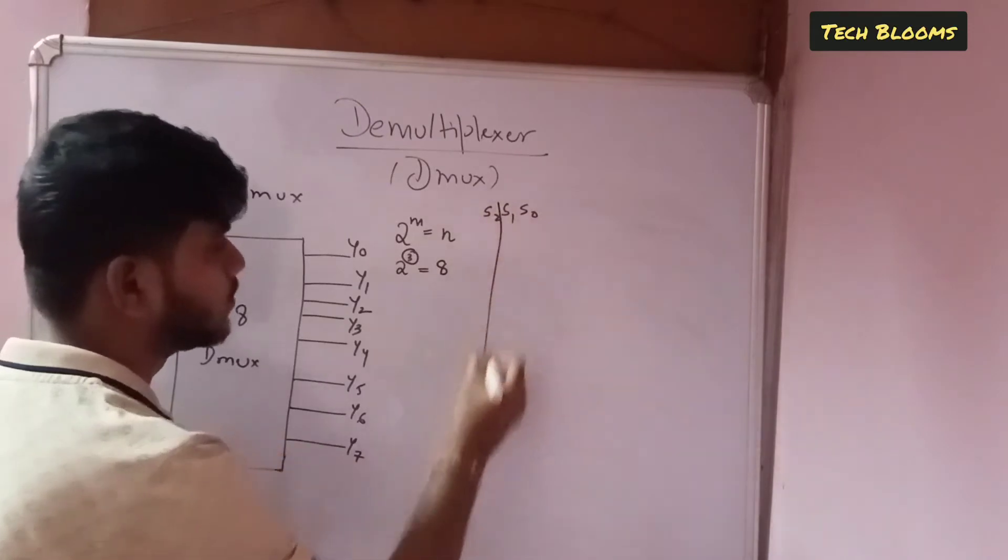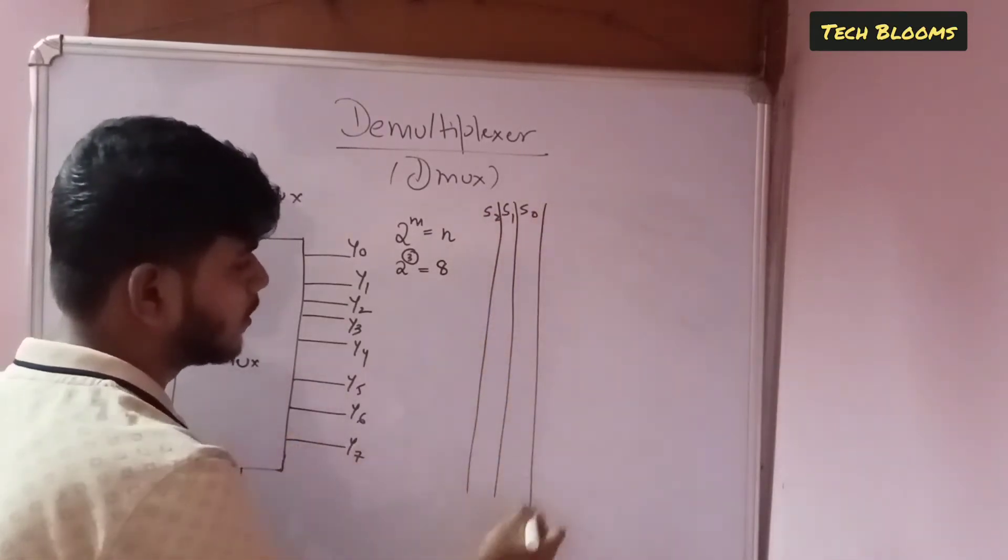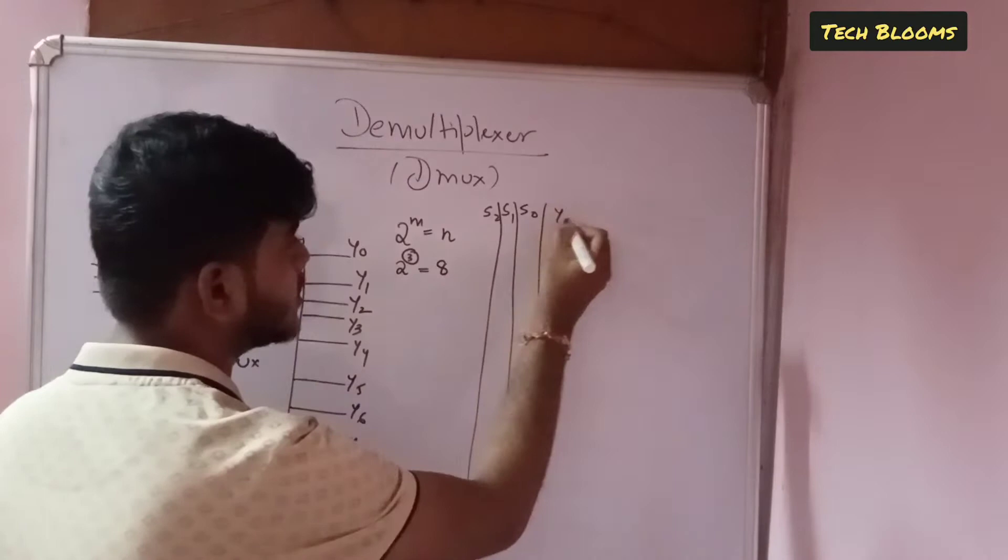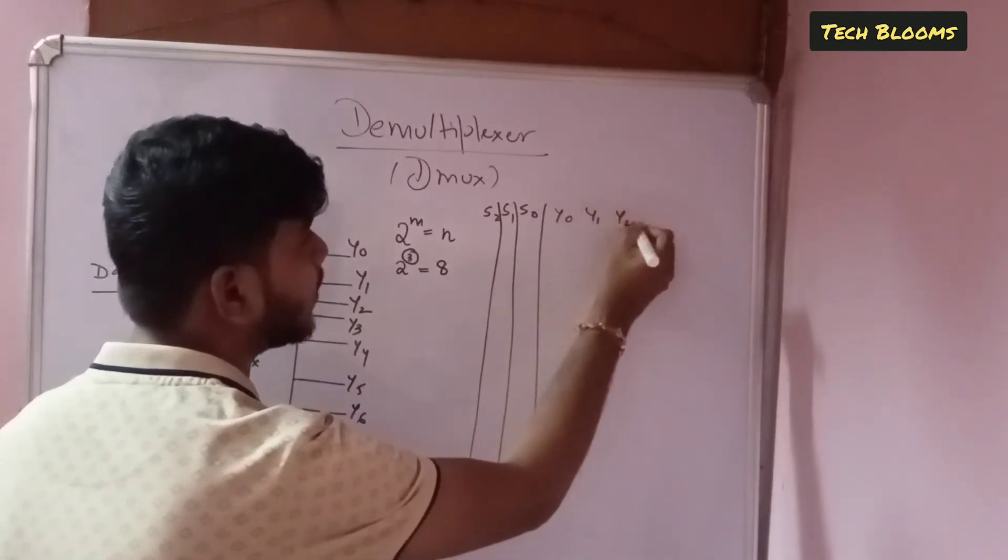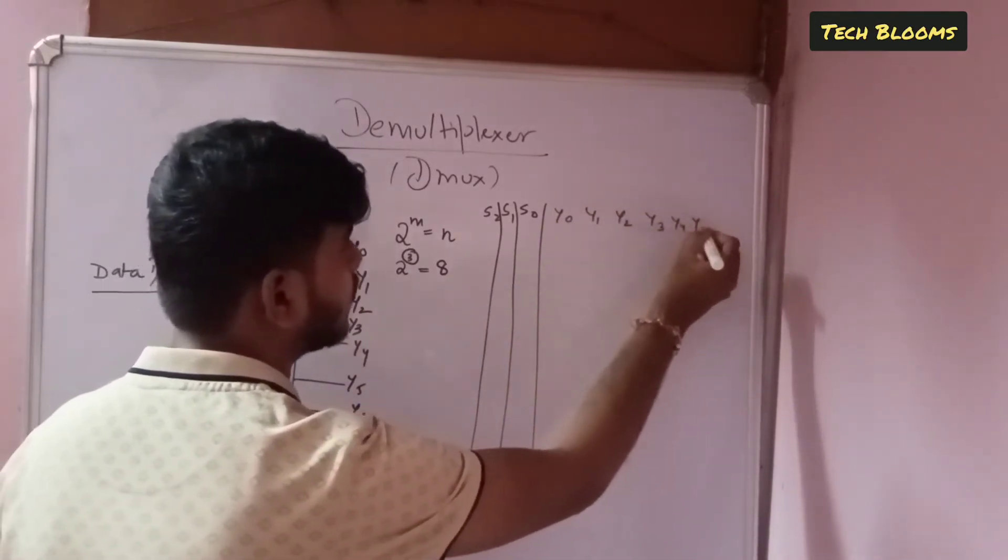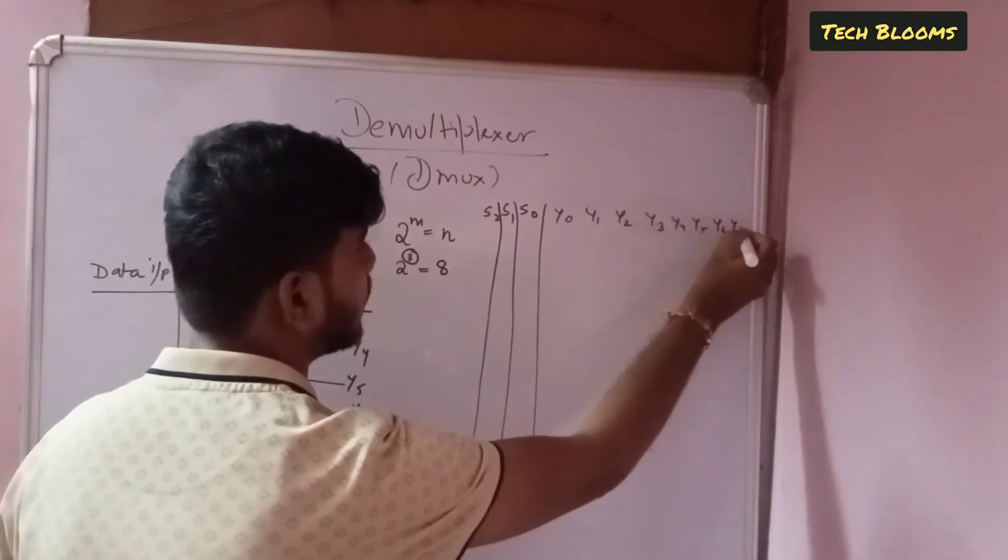and we have outputs that is y0, y1, y2, y3, y4, y5, y6, y7.